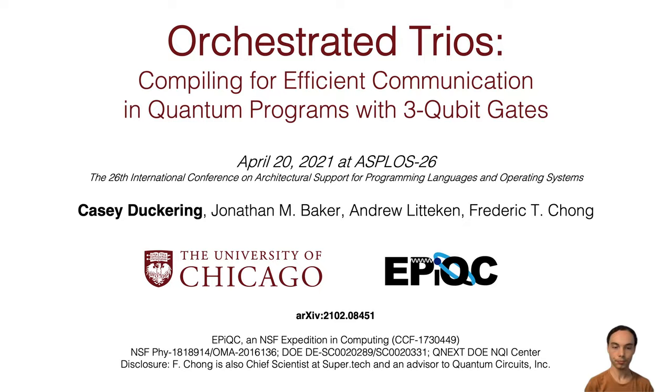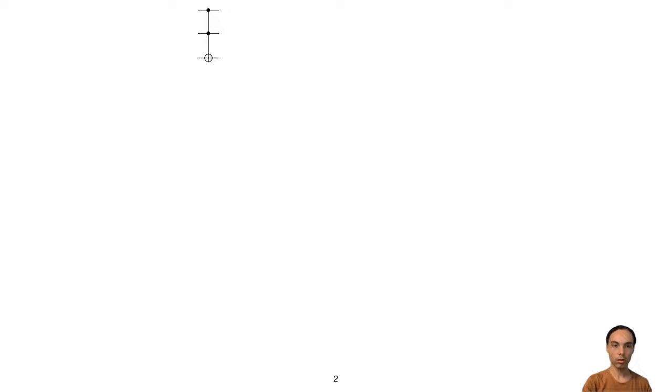So quantum programs are made of quantum gates, making up a quantum circuit, and Toffoli gates are a common primitive gate used in many algorithms, where these qubits are the inputs, and then this is the Toffoli gate. So if the two inputs are one, then it will flip the output qubit, resulting in an AND operation.